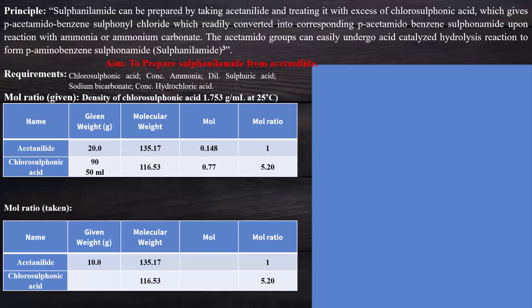The principle on which the drug synthesis is based: sulfanilamide can be prepared by taking acetanilide and treating it with excess chlorosulfonic acid, which gives para-acetamidobenzene sulfonyl chloride. This readily converts into the corresponding para-aminobenzene sulfonamide upon reaction with ammonia or ammonium carbonate. The acetamido group then undergoes acid-catalyzed hydrolysis to form para-aminobenzene sulfonamide, known as sulfanilamide.